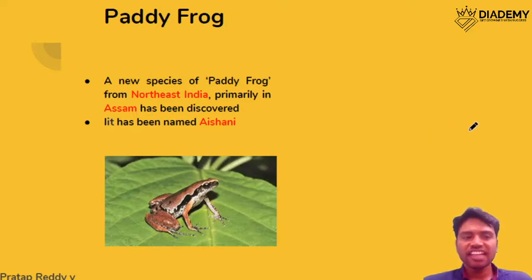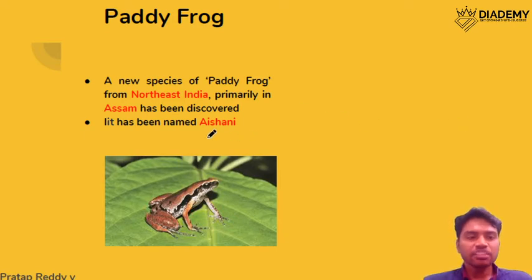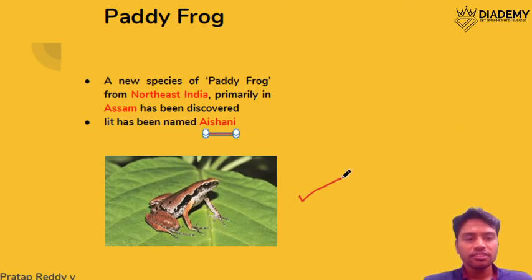The next topic is about the paddy frog. A new species has been found in Assam and it has been named 'Aishani' — that is the paddy frog.